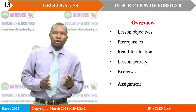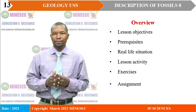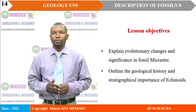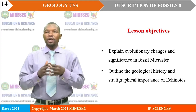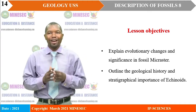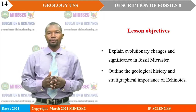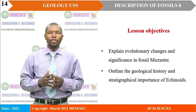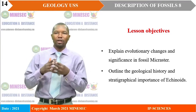In our lesson overview, look at the objectives, the prerequisites, the real-life situation, and the lesson activity. We shall have some exercises and will end with an assignment. The first objective is to explain evolutionary changes and their significance in fossil Micraster. We will also outline the geological history and the stratigraphical importance of echinoids in general.